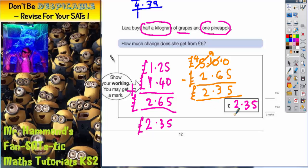But it would be possibly easier for some of you just to count up from £2.65 until you reach £5. Either way is acceptable because you should still get the same answer of £2.35.